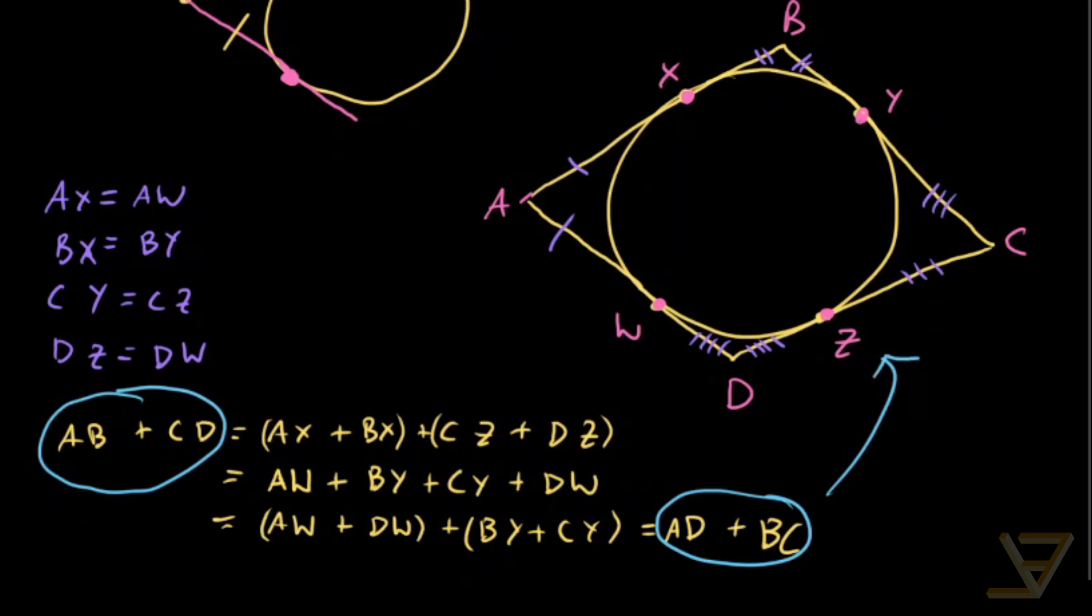It says that this segment over here plus this segment over here is equal to this segment plus this segment for any tangential quadrilateral. And by tangential quadrilateral, I mean a quadrilateral that has an incircle that is tangent to each of the four sides.